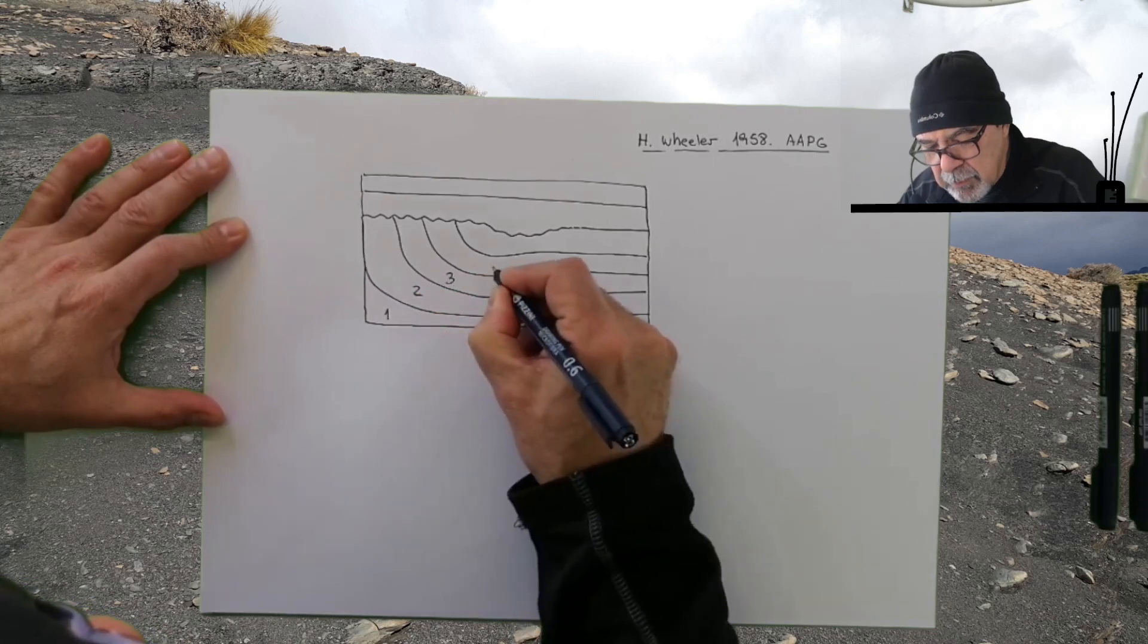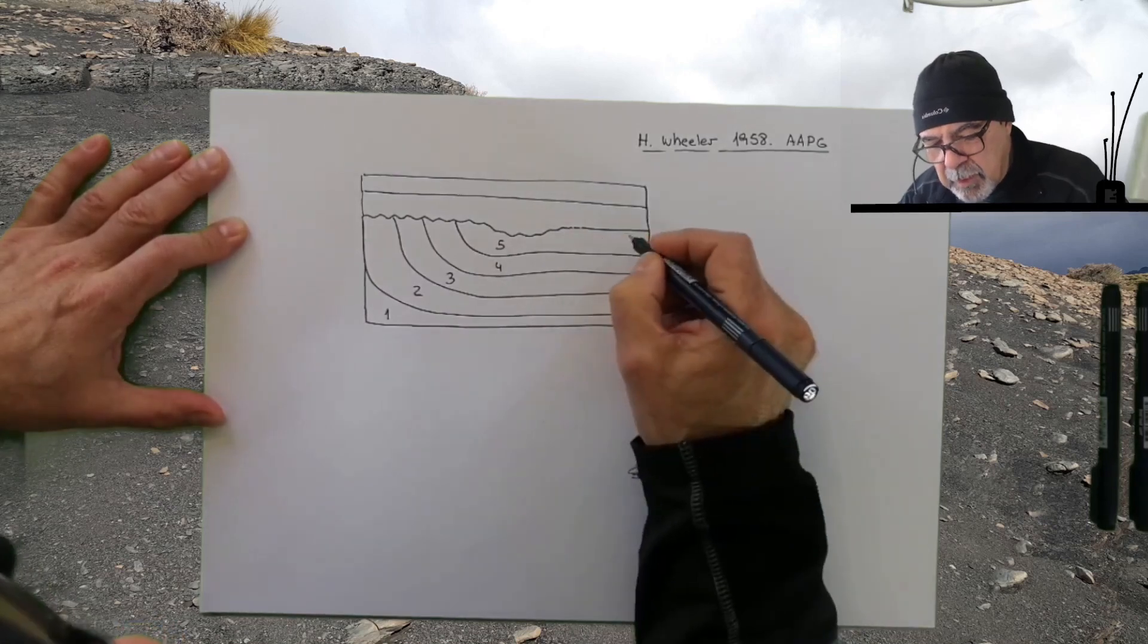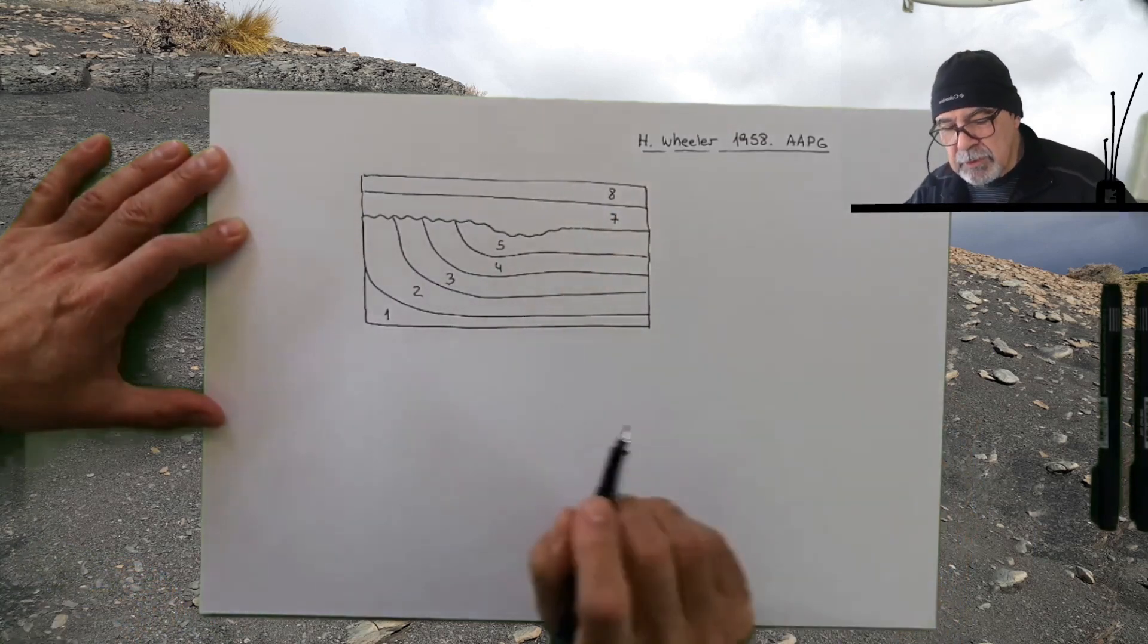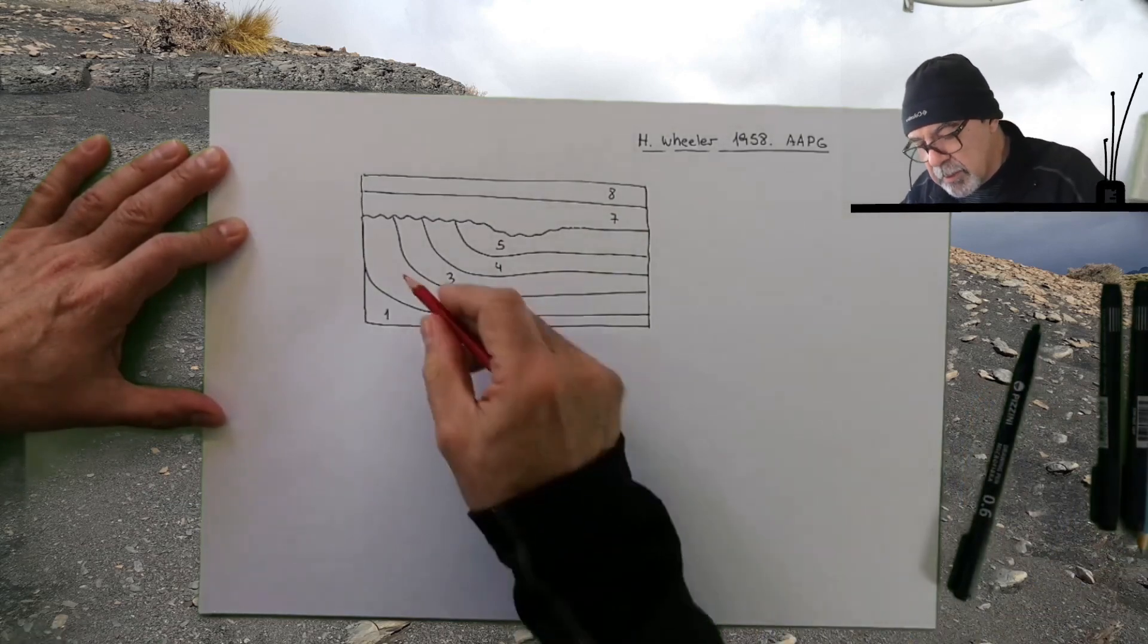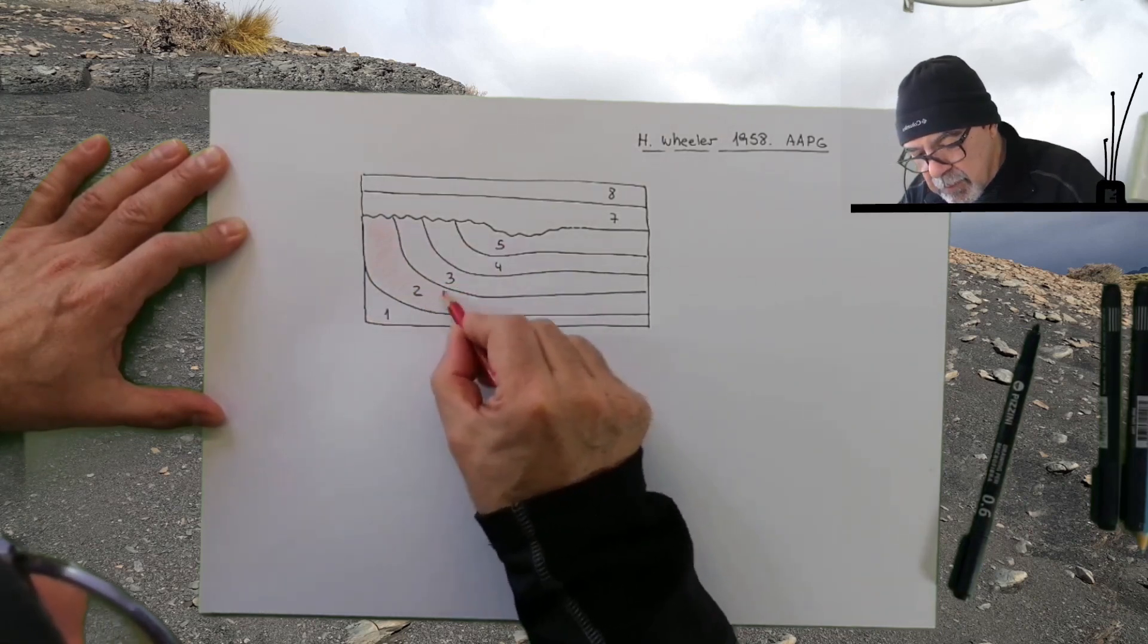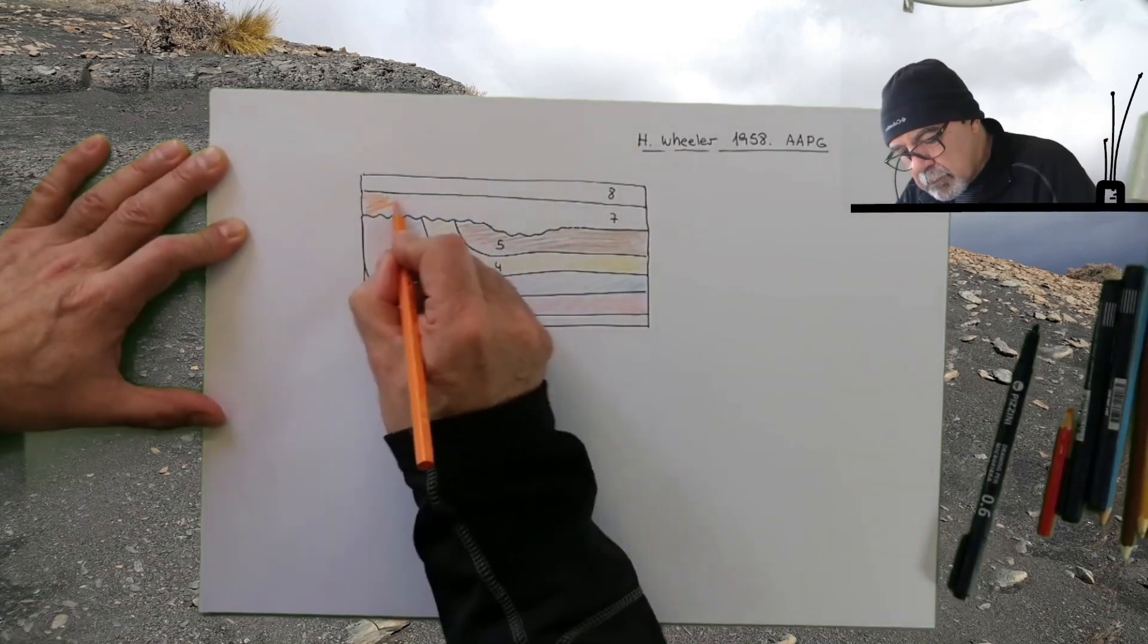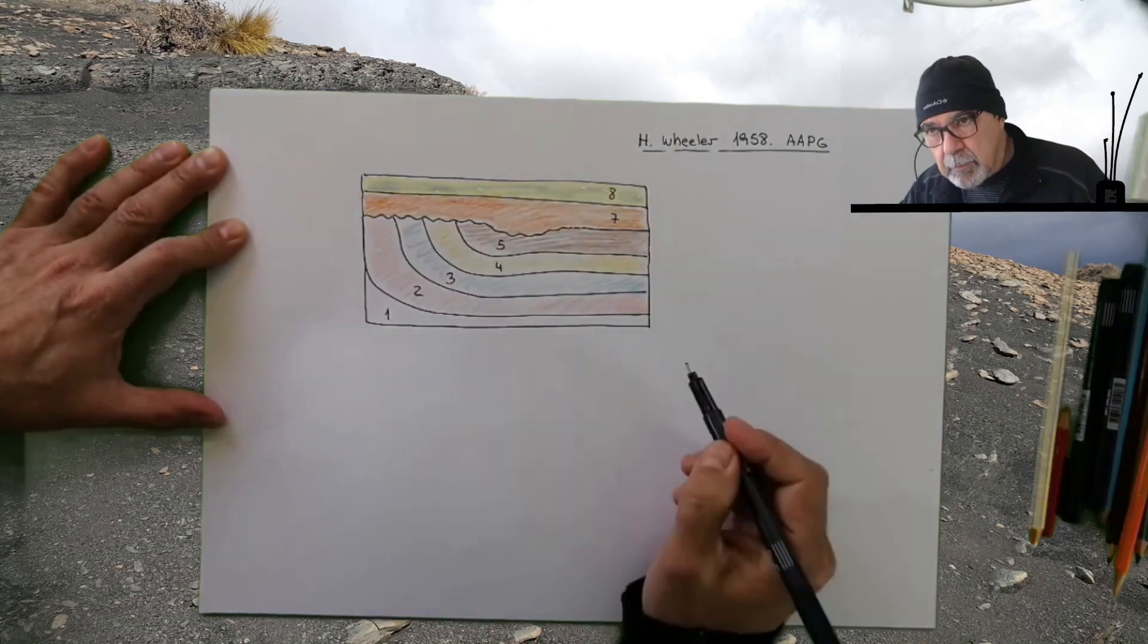We are going to put some numbers representing the time during the accumulation. We are going to start with one, then two, three, four, five, then I'm going into seven and eight. This is the first step when you start making a Wheeler diagram: put the numbers for the different times.